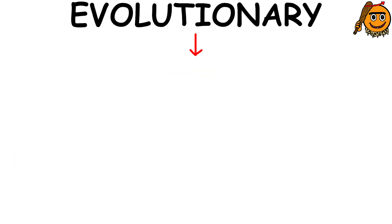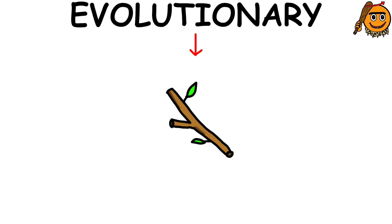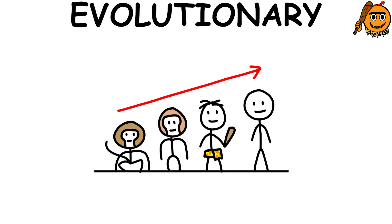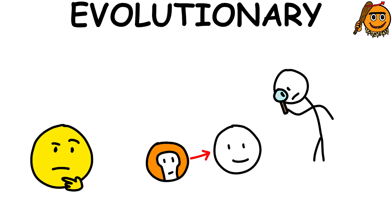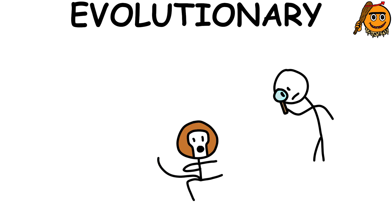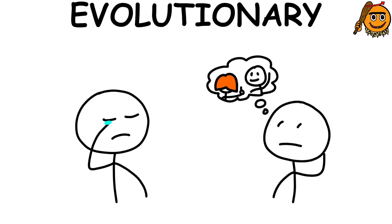Evolutionary psychology. Evolutionary psychology is a branch of psychology that looks at human thought and behavior from an evolutionary perspective. Researchers who study evolutionary psychology are interested in answering questions about how evolution has shaped human behavior and psychological processes, such as emotion and social cognition.